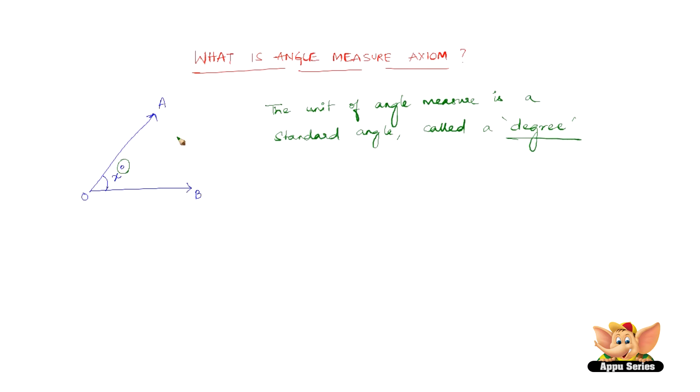Now, if the measure of angle AOB is x degrees, we write angle AOB equals x degrees.